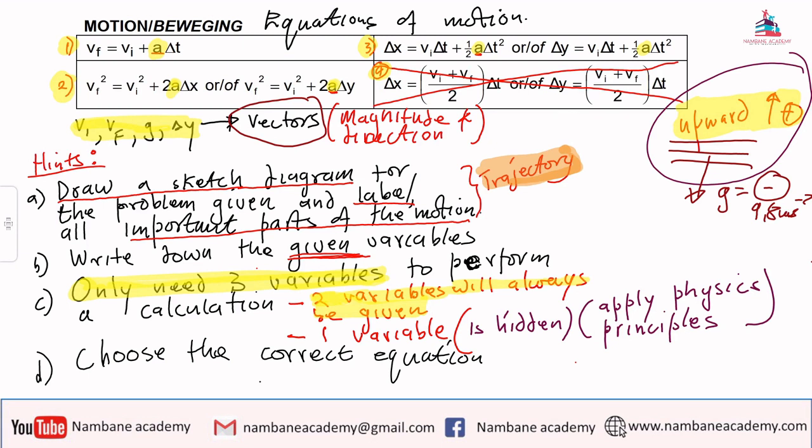Write down the given variables. I only need three variables to perform a calculation. Two variables will always be given directly. One variable will be given but it will be hidden - it's there somewhere but needs us to apply the physics principle. It will require us to use the physics principle, which I'll explain as we move on. The last hint says choose the correct equation.